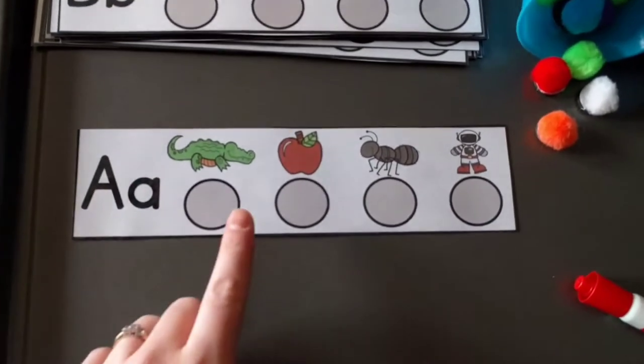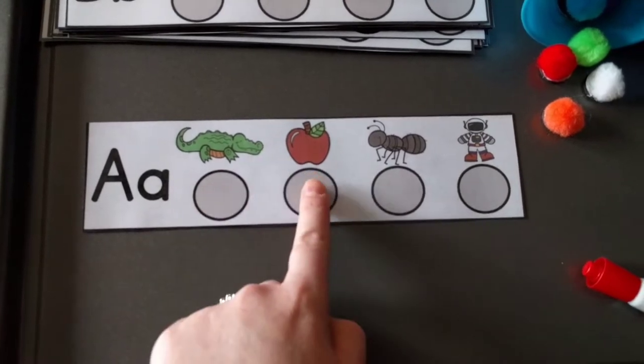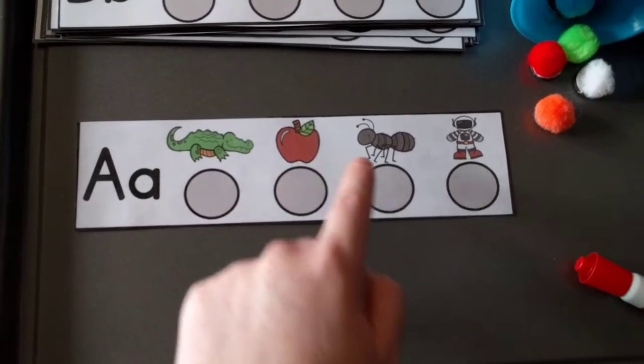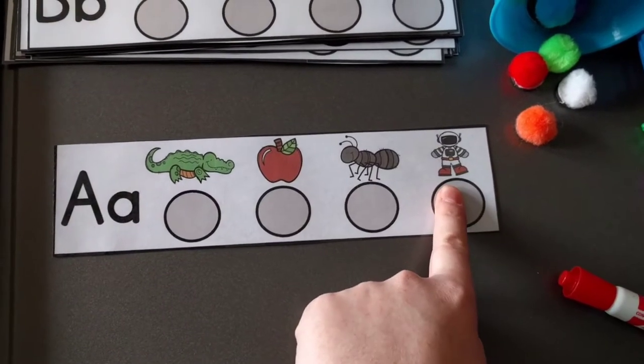They would say the sound. And then they would touch each dot: ah, ah, alligator, ah, ah, apple, ah, ah, ant, ah, ah, astronaut.